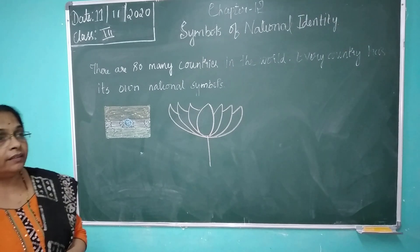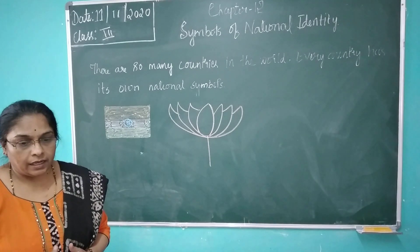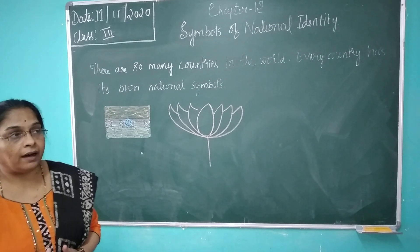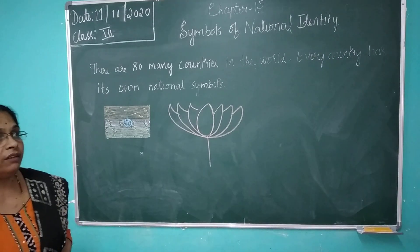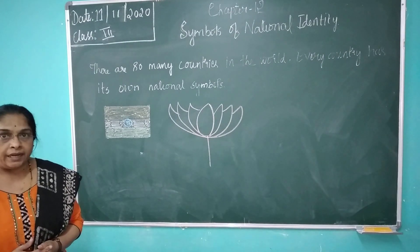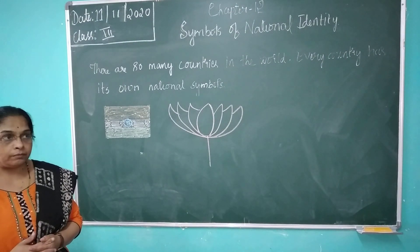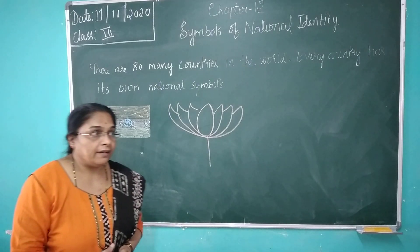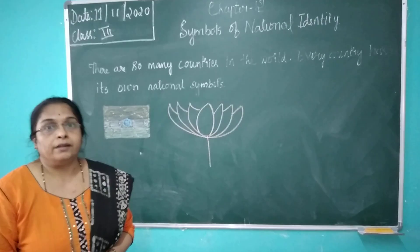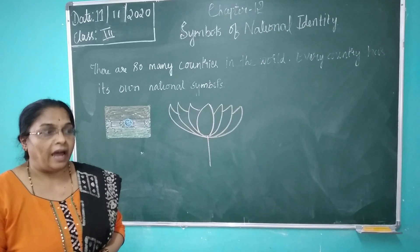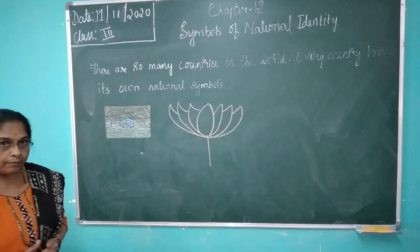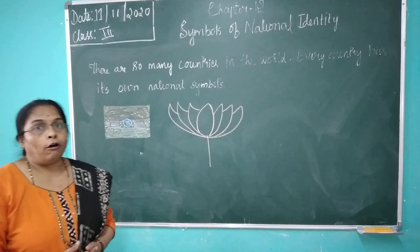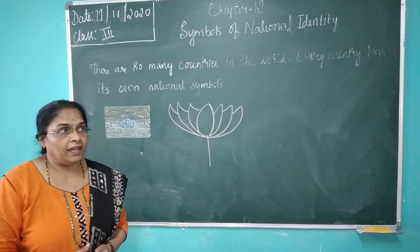So children, the main Indian symbols are: national flag, national anthem, national song, national tree, national animal, national bird, national flower, and national fruit. Come children, let us learn all these things in detail.